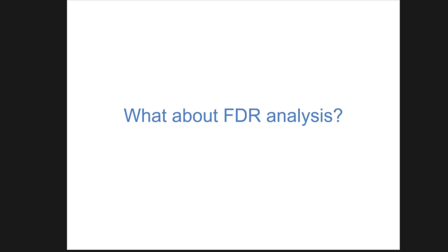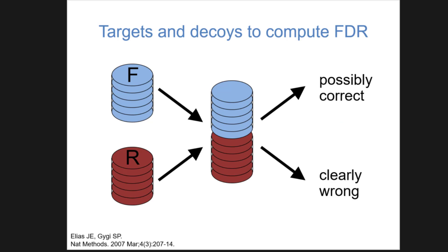A lot of you have seen slides like this — this is the standard target-decoy approach where you have a list of peptides assigned to peptides you think are natural peptides potentially in your sample. Some are going to be in your sample, some are not. The idea is to come up with a list of alternate or decoy peptides that you know are definitely wrong. While you can't say something definitive about the blue distribution, you can definitely say those red peptides are wrong. It's a way of injecting a null hypothesis into your experiment to decide if any individual peptide is a good peptide.